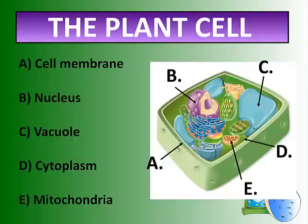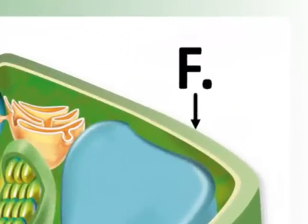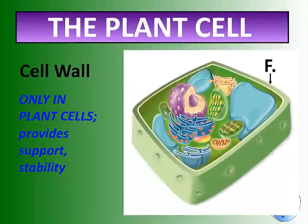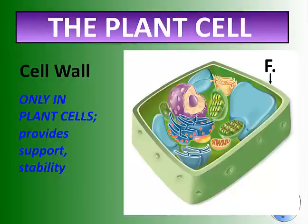But there are two more structures only found in plant cells, and these are very important to maintaining structural stability and health within the plant. The first is the cell wall — it's another layer on the outside. Cell walls are only found in plant cells, not in animal cells. This provides support and stability, which is the reason that plants are able to grow straight up. Plants don't have bones, so they rely on the individual strength of their cells to maintain that structure.